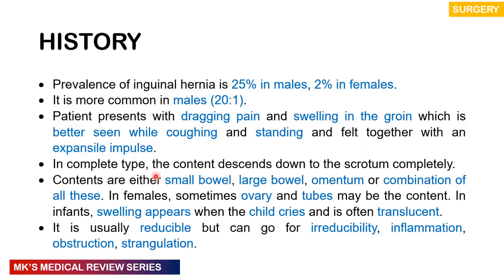Prevalence is much more common in males — 25% in males versus 2% in females, so about 20 times more common in males. Clinically: there is a dragging pain and a swelling in the groin better seen when the patient coughs, stands, or strains. You can feel a cough impulse if not strangulated. It may completely descend to the scrotum. Contents may be small bowel, large bowel, omentum, or a combination; in females, ovaries and tubes may be the contents. In infants, swelling appears when the child cries, is often translucent, and usually reducible — but can be irreducible, inflamed, obstructed, or strangulated.